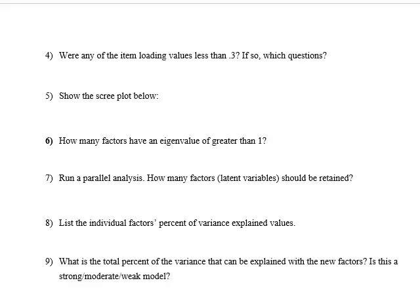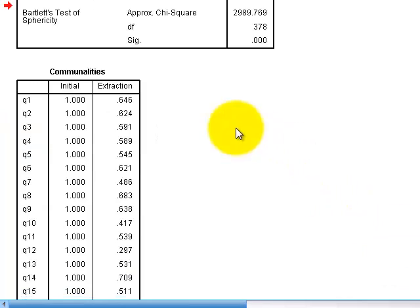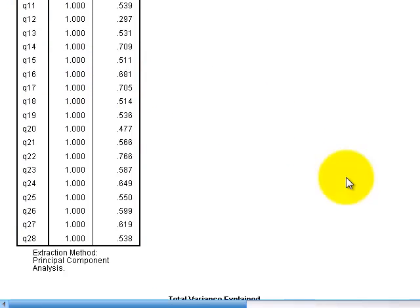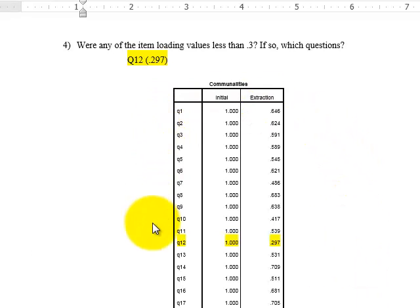Question four, were any of the loading values less than 0.3? That's the commonalities part. That is this next table here. So basically, you're just looking for any extraction value for any of the questions to be less than 0.3. And it looks like there is one. It looks like only one. Question 12 had a very low loading. It's only 0.297.